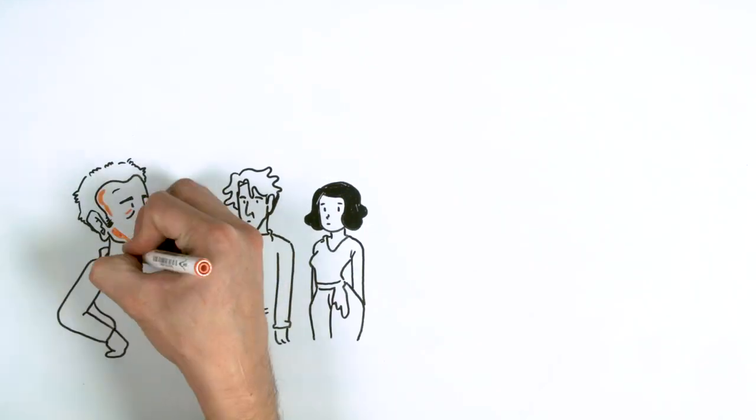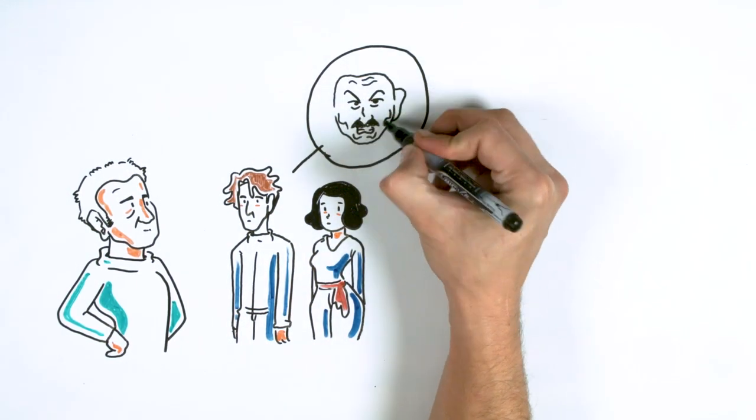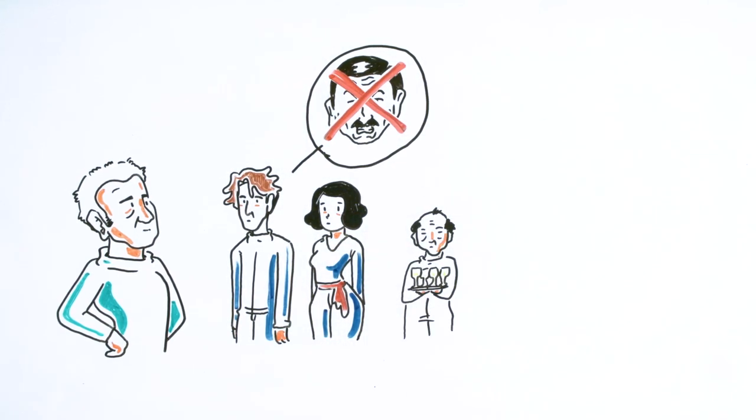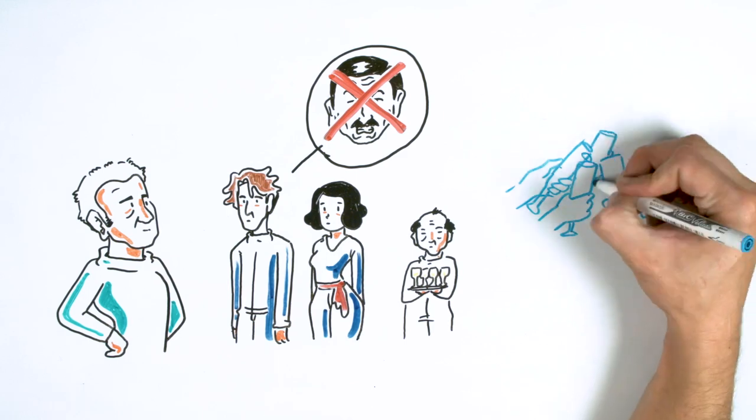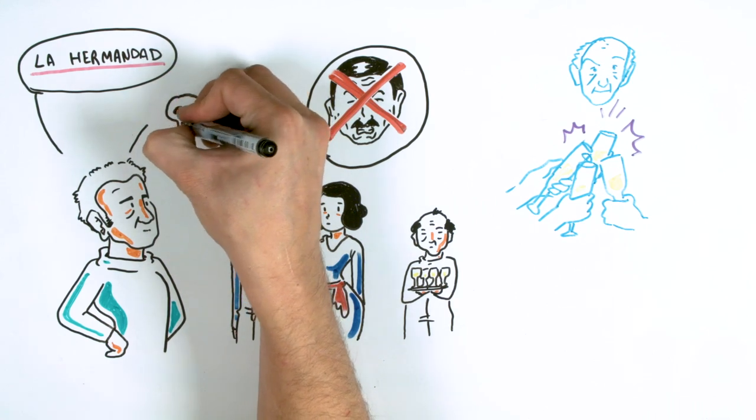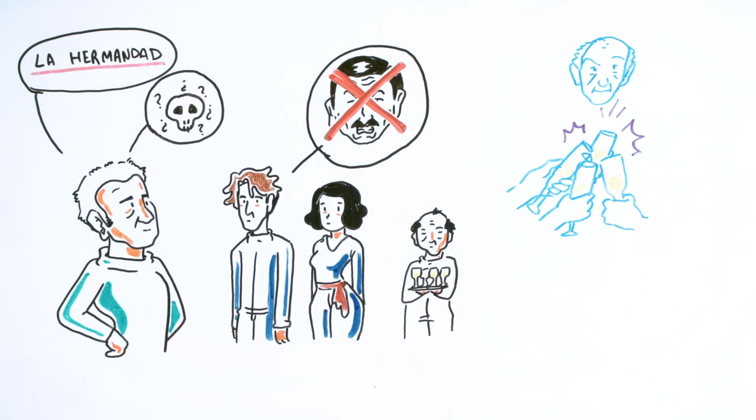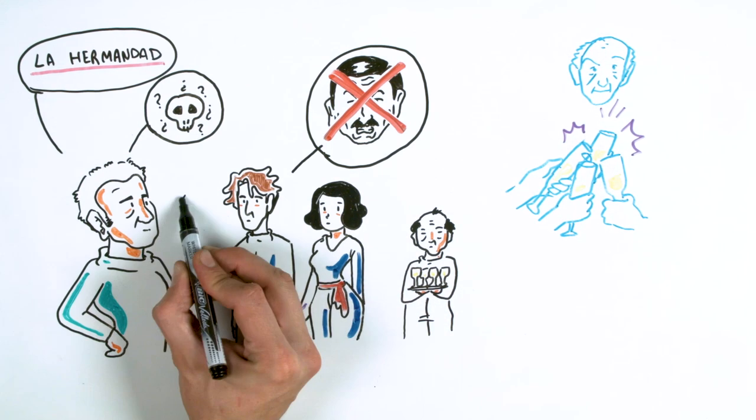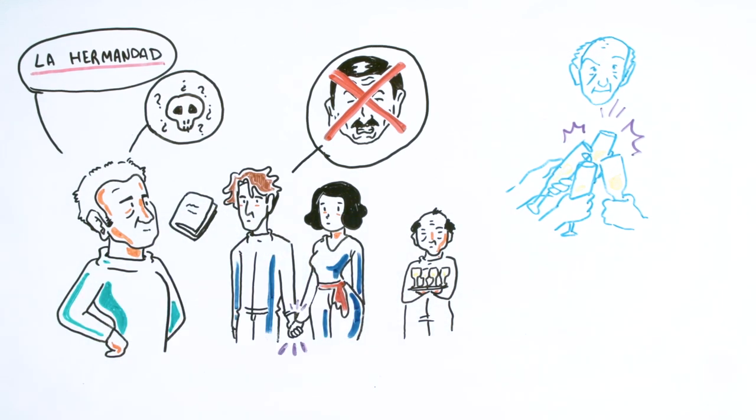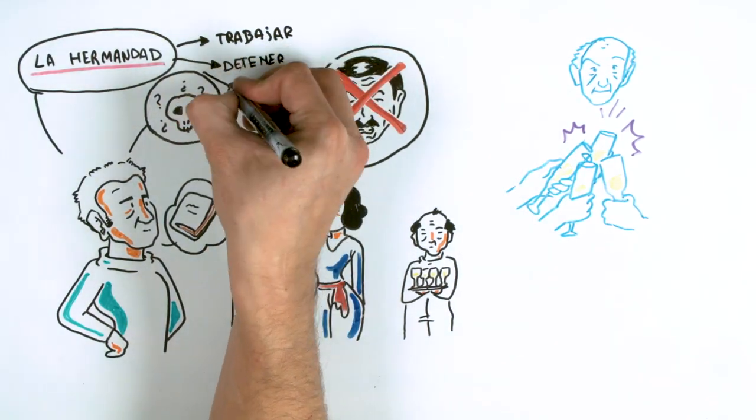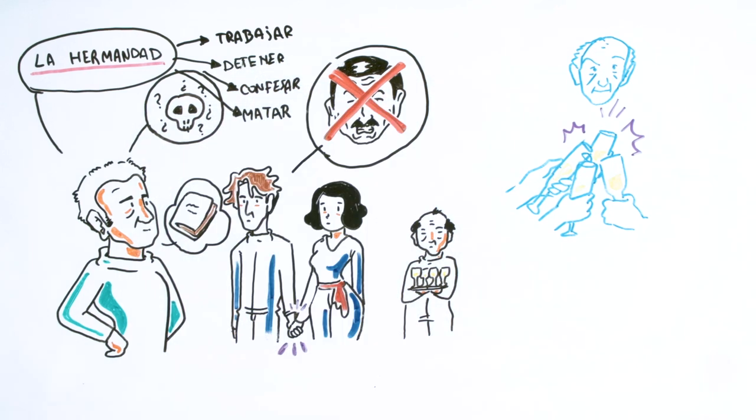Julia and Winston went to O'Brien's house. Winston confessed all his concerns and his relationship with Julia. O'Brien's assistant, also an enemy of the party appeared, and they toasted wine for Goldstein. O'Brien confirmed the existence of the Brotherhood and asked them a series of questions about how they would be willing to go to fight the party. They were willing to do anything but separate. O'Brien informed them they would receive the Goldstein manuscript. Lastly he explained the Brotherhood worked like this: they worked, held them, they confessed and killed them.